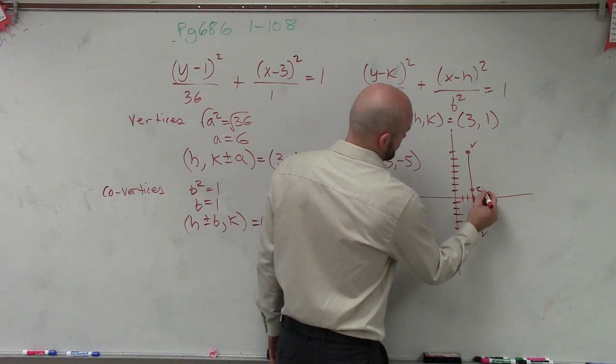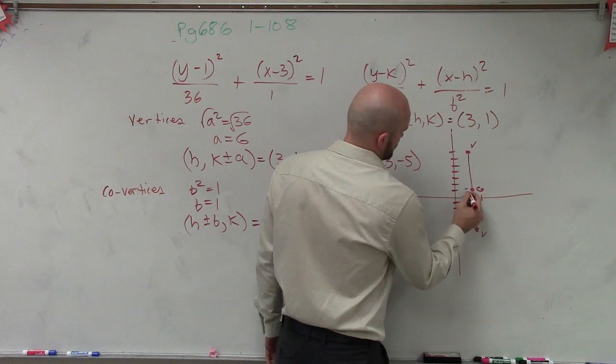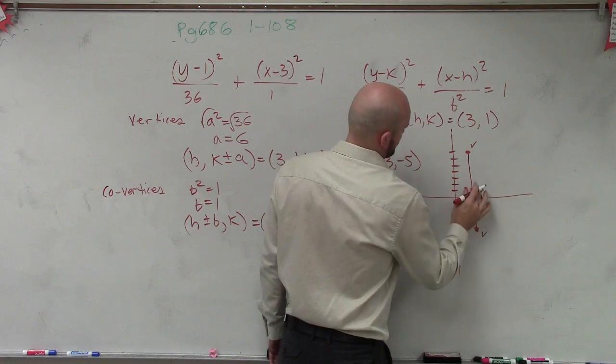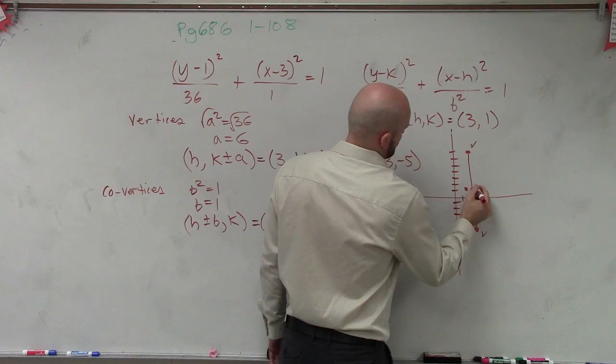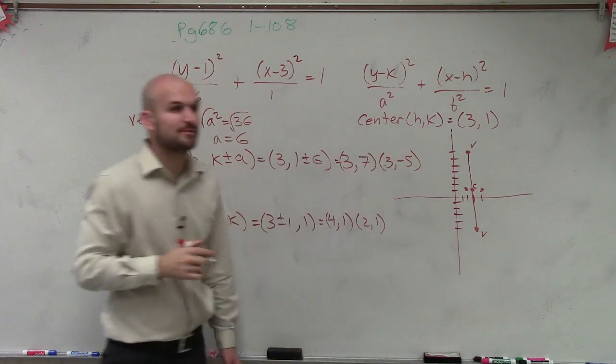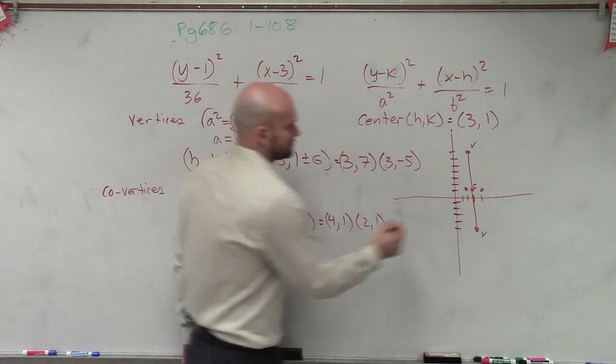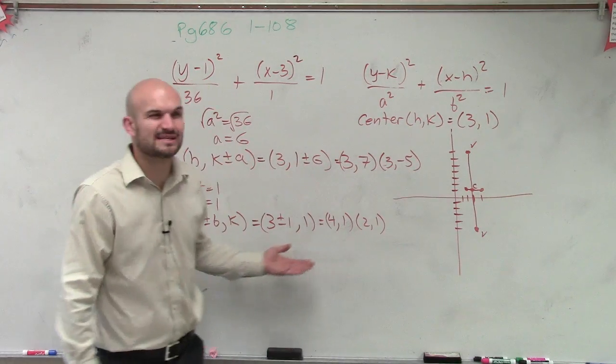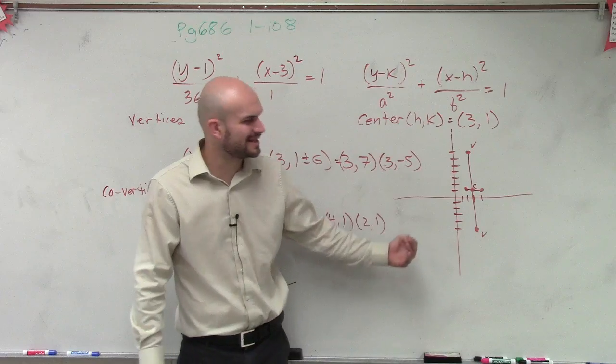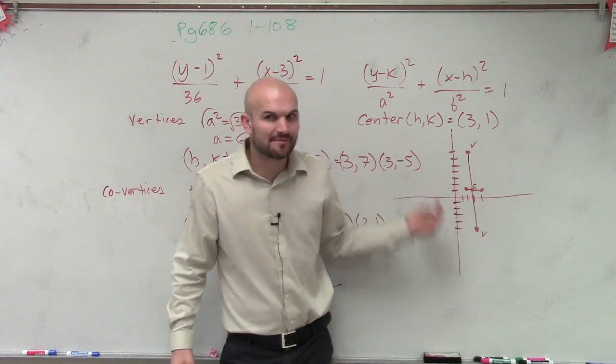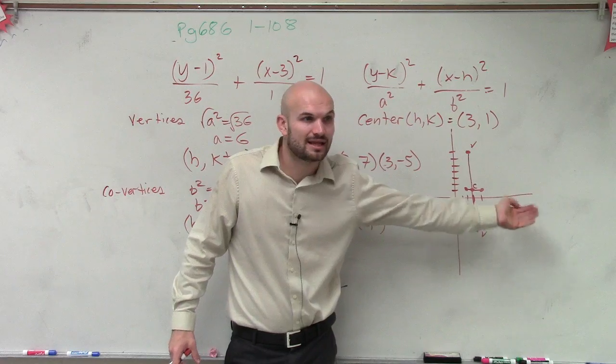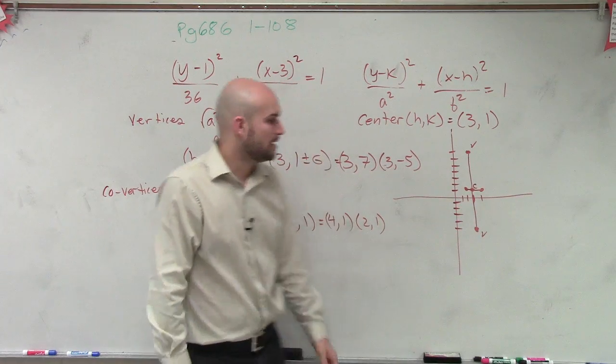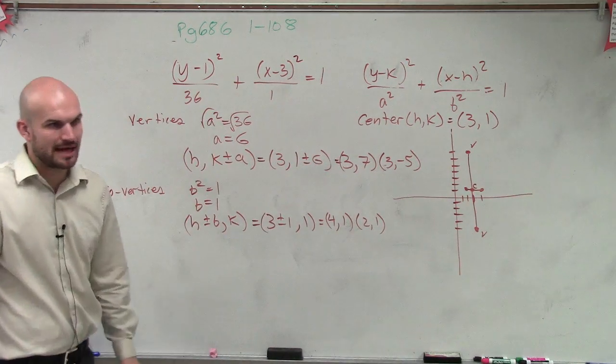So let's plot those. So those are going to be my two co-vertices. Right? And you guys don't really need to do all this algebra work, Dustin, because when you're looking at this, you can just say, oh, my value of b, I'm just going to move it from the center, one to the left and one to the right. Correct? But then you guys can at least see algebraically how I would do this.